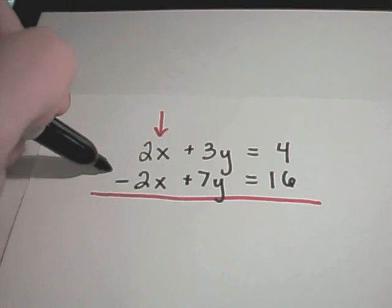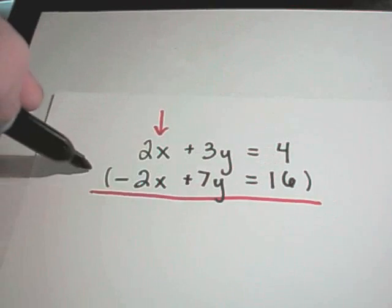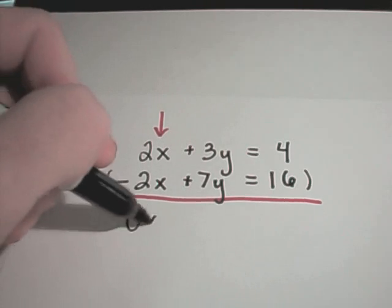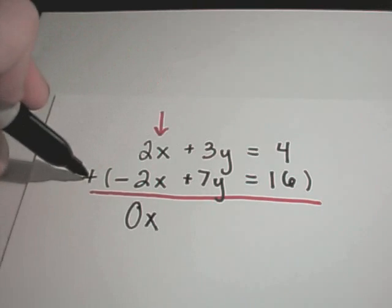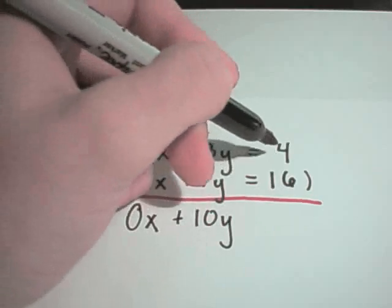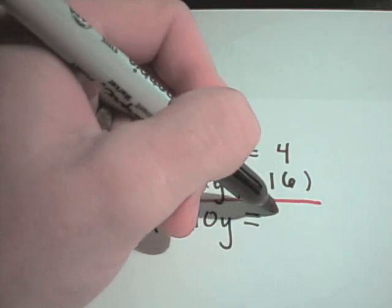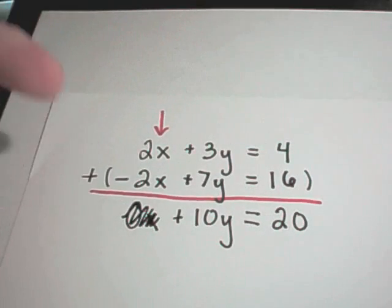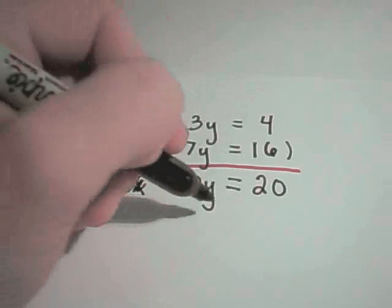So maybe I can even put it in parentheses and put a little addition out here. So 2x plus negative 2x is 0x. 3y plus 7y is 10y. And then 4 plus 16 is 20.